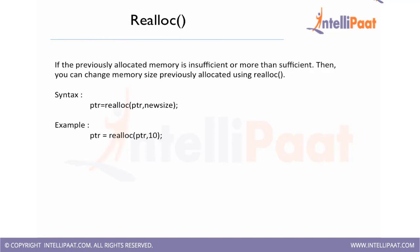Realloc — if previously allocated memory is insufficient or more than sufficient, then you can change the memory size previously allocated using realloc. Suppose you want more memory in your program you can do realloc, or suppose you have reserved a lot more memory than you needed, then also you can use realloc. The syntax is: ptr = realloc(ptr, new_size). It will increase or decrease the size of memory already reserved using either malloc or calloc.